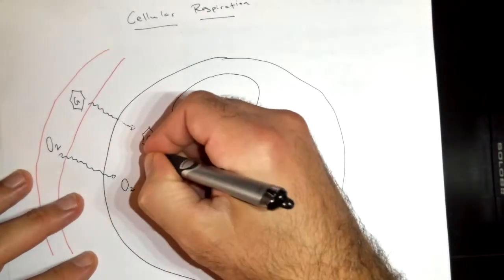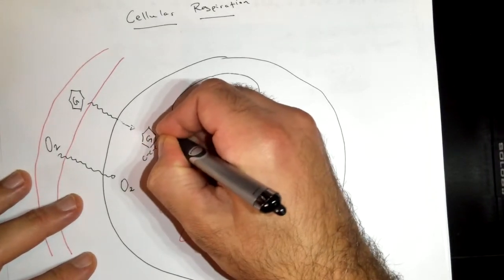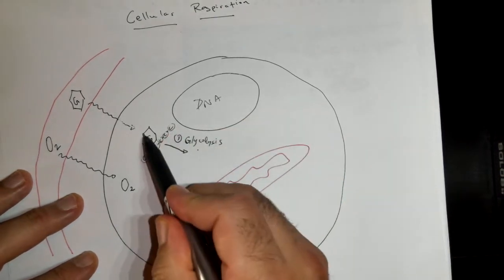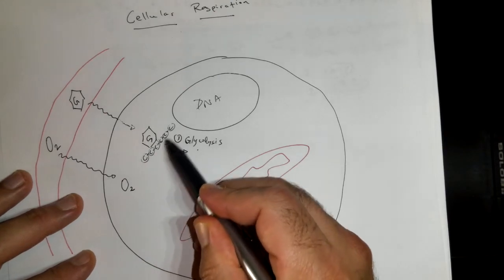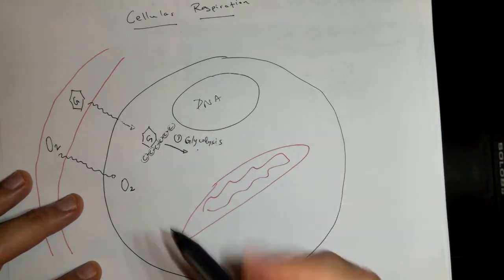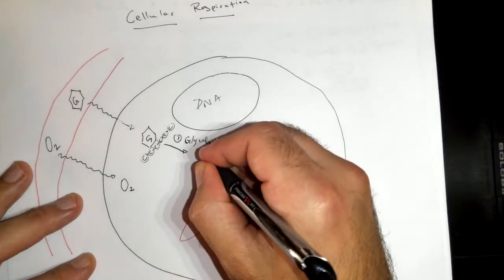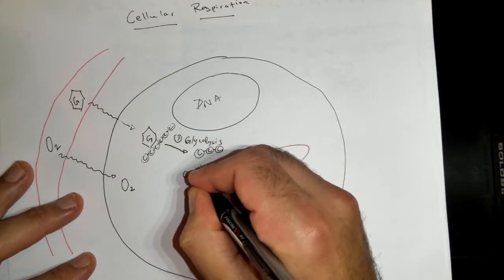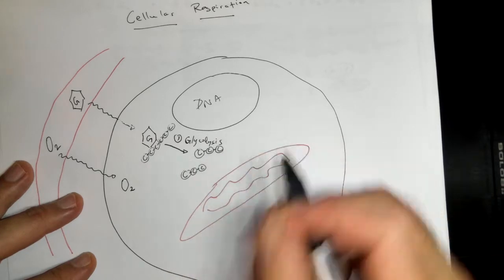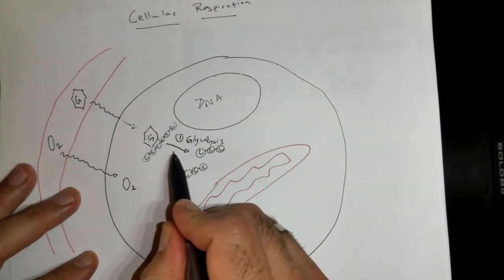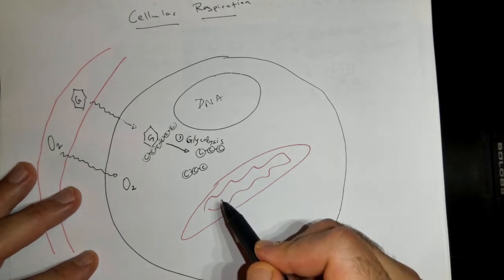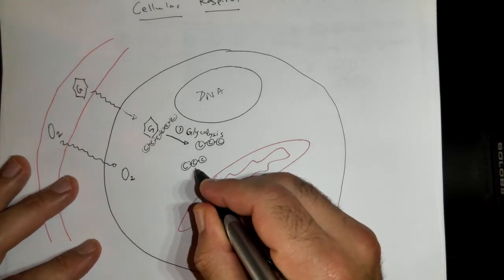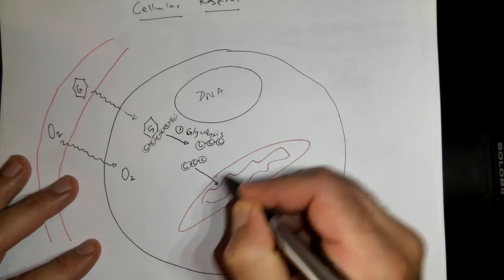Now let's go back to the big picture. We have glucose with six carbons, glycolysis gives us two pyruvates, and now we can finally go into the mitochondrion. These pyruvates enter the mitochondrion. Let's draw the mitochondrion larger to see what happens to these pyruvates.